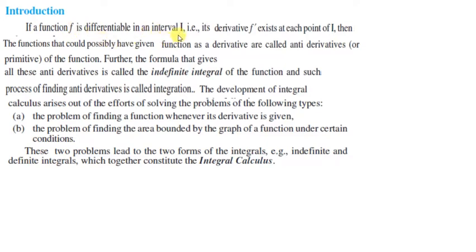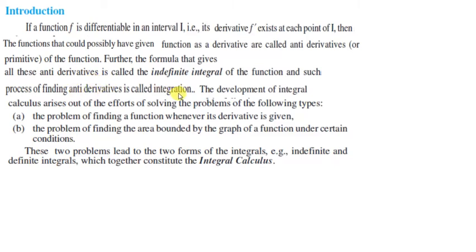If a function is differentiable in an interval I — means if the derivative of function F exists at each point of I — then the functions that could possibly have given function as derivative are called anti-derivatives. अगर हमें कोई function given है तो उस function को पता लगाना जिसका वो derivative है, यह integration कहलाता है। वो function जिसका वो derivative given function होगा, उस function को हम anti-derivative या primitive कहेंगे of the given function। और इस process को — of finding the anti-derivative — it is called integration.